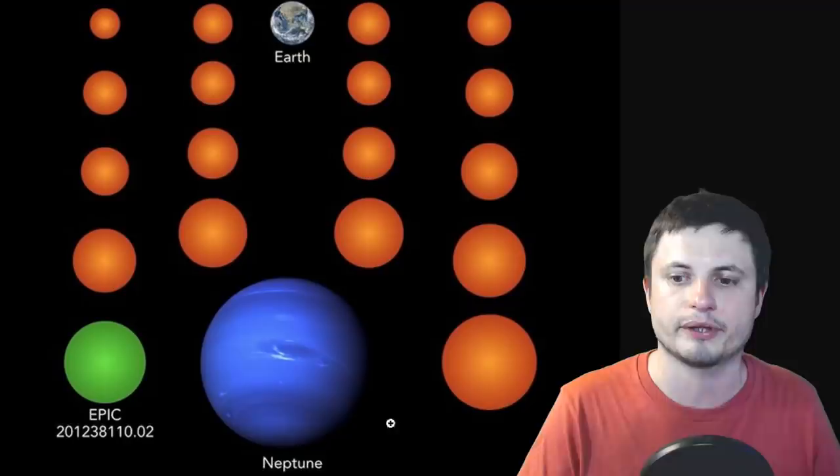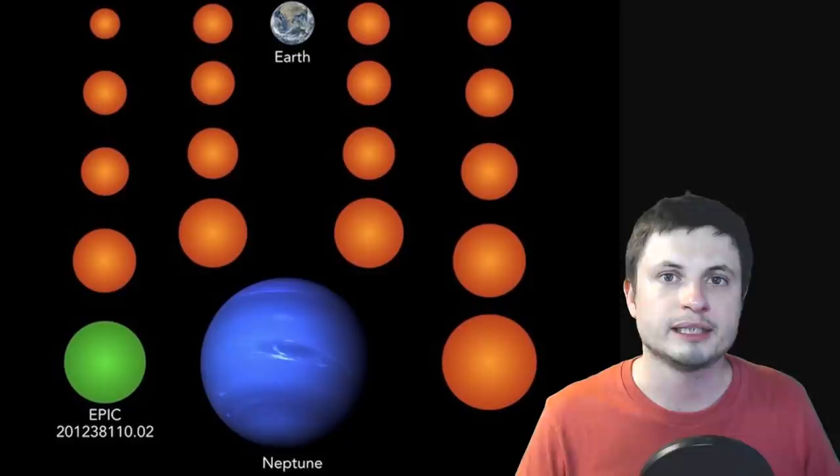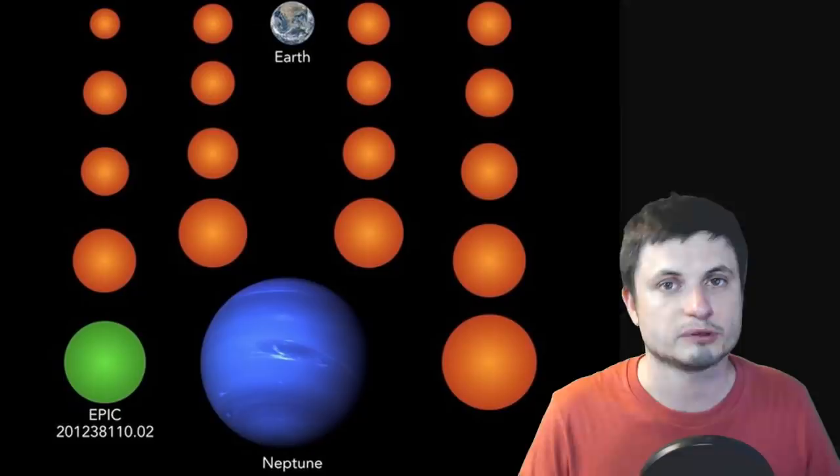But this planet right here with a relatively difficult name is also very special because it's in a habitable zone of its parent star. In other words, it has a potential to have liquid water and for all we know atmosphere and maybe even habitable conditions, maybe life, we don't really know.